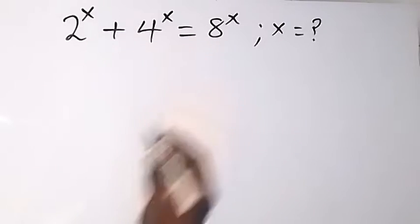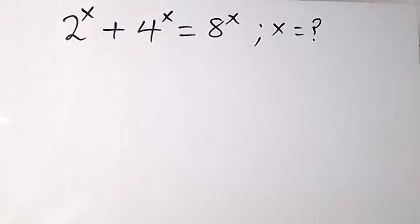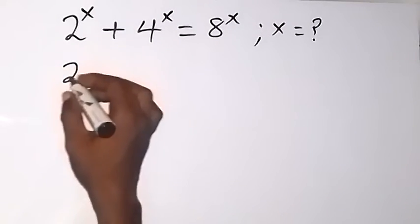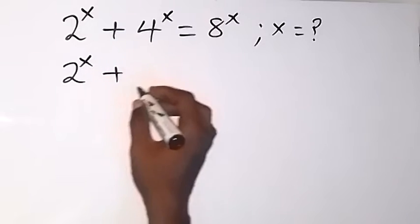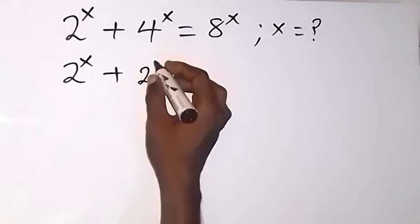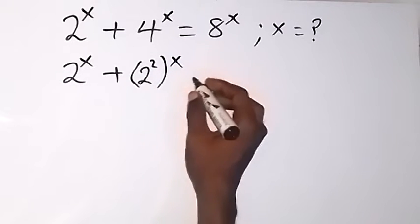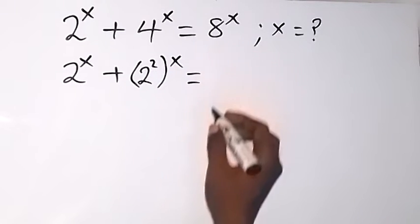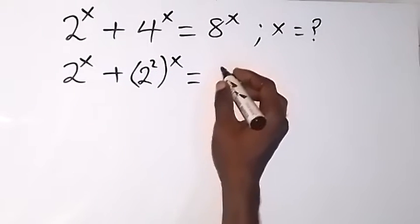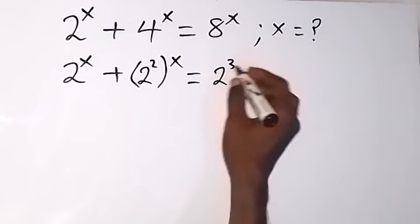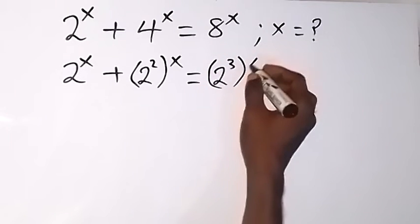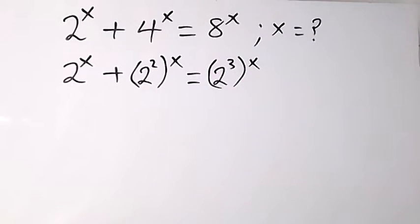We can change this to have the same base. That is, we can have 2 raised to power x, plus 2 raised to power 2 — same thing as 4 — then raised to power x, equals 8. 8 can also be expressed as 2 raised to power 3, then raised to power x. From here we can apply the law of indices.